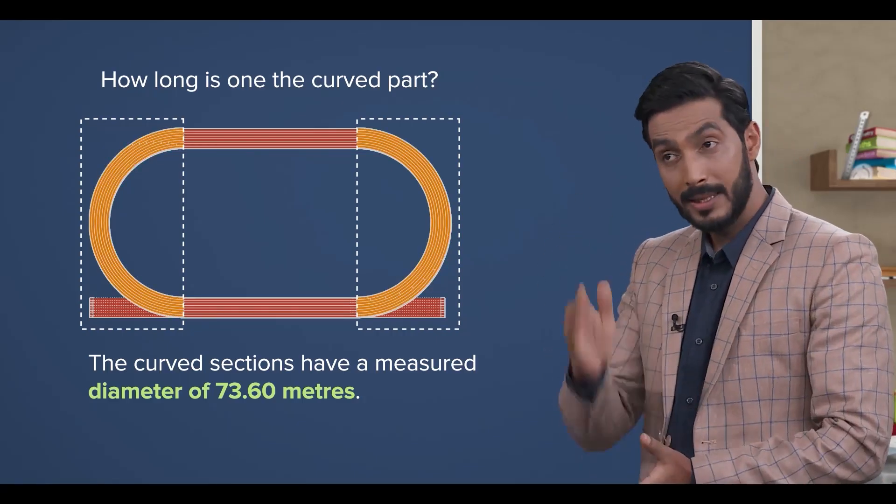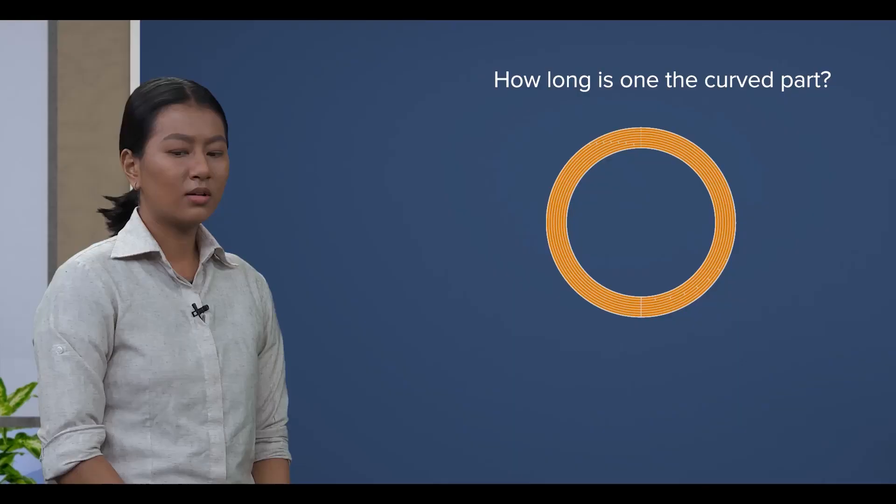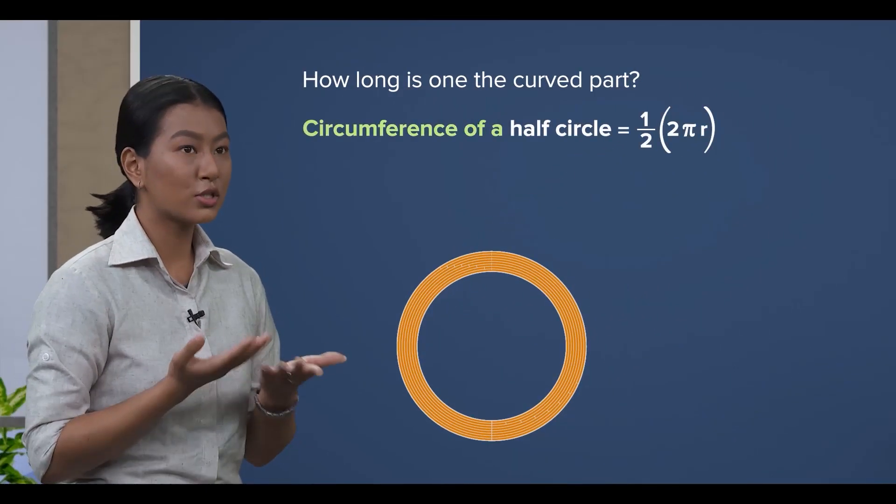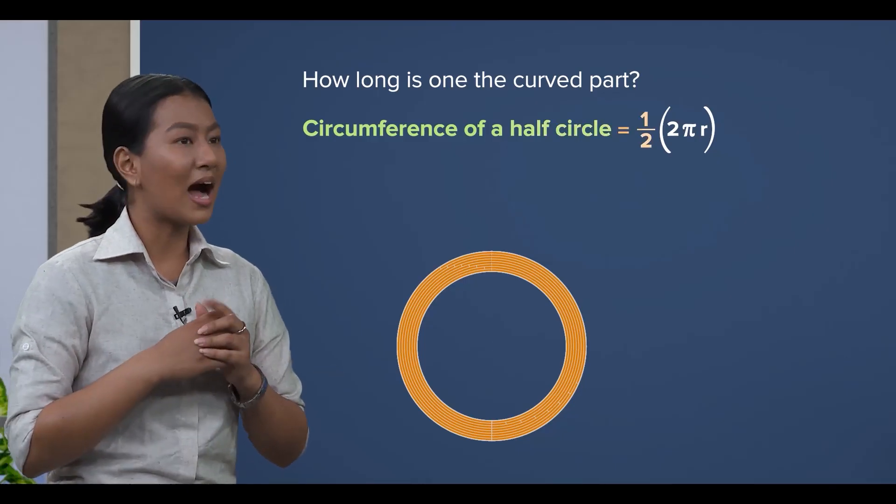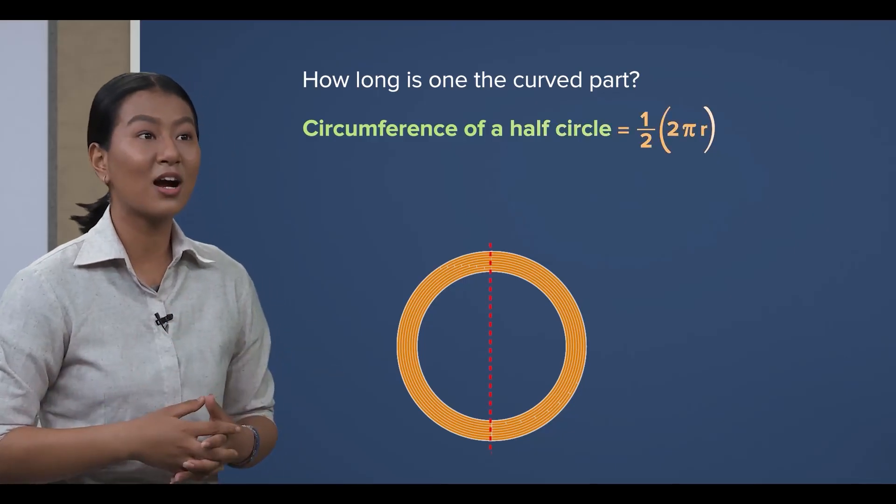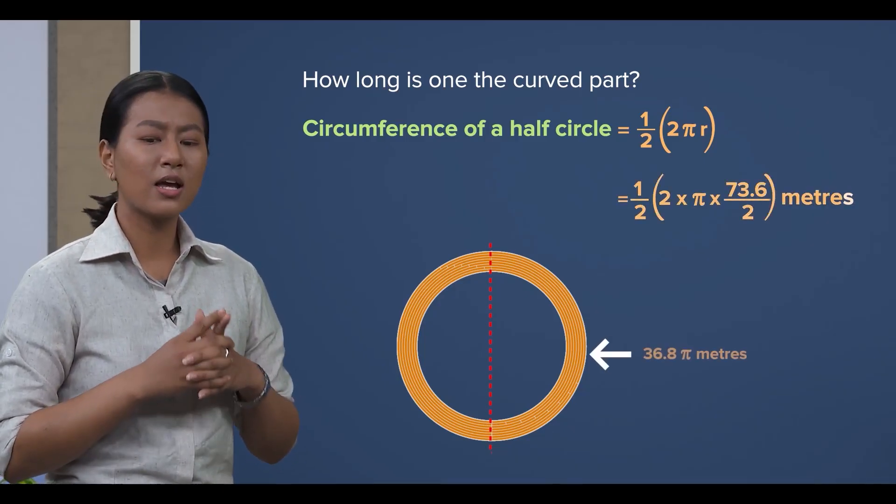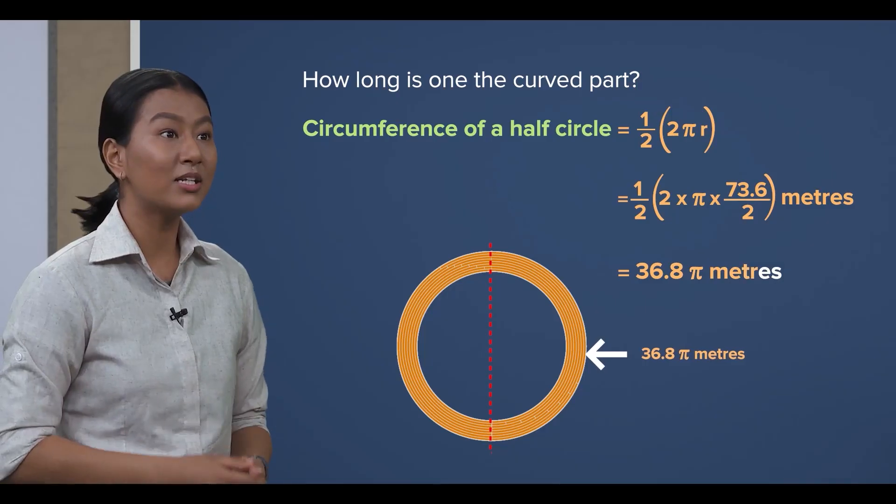Remember, the curve is simply half of a circle. Oh yes, we just need to divide the circumference of the circle by half, which is half of 2 times pi times r. Therefore, the circumference of half of the circle is 36.8 pi meters.